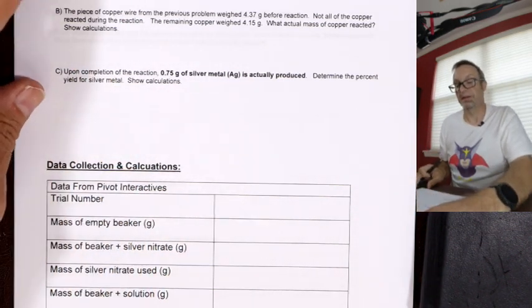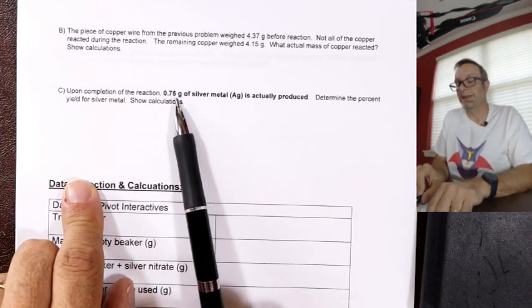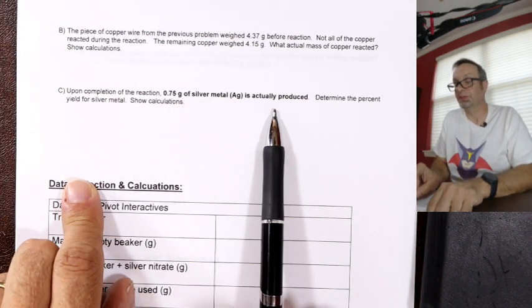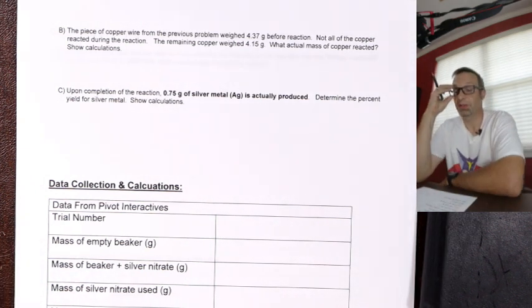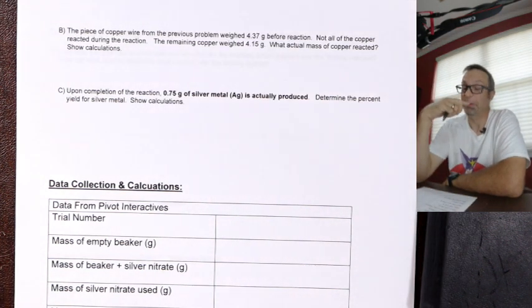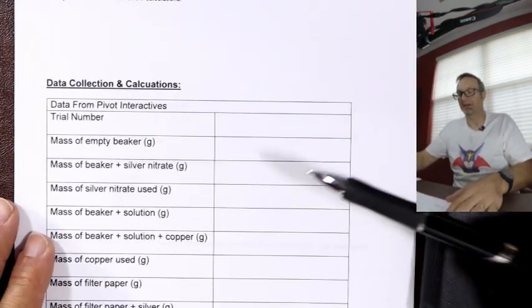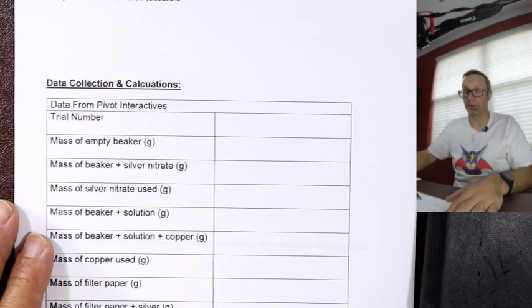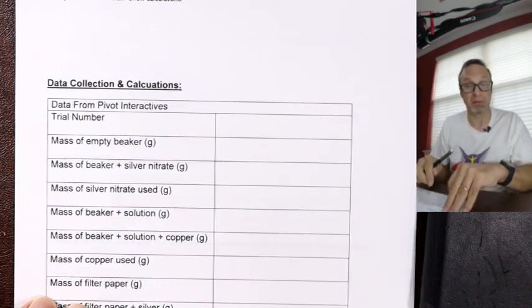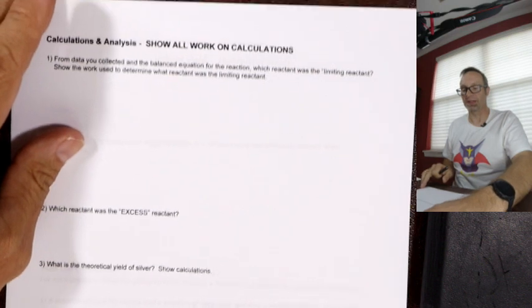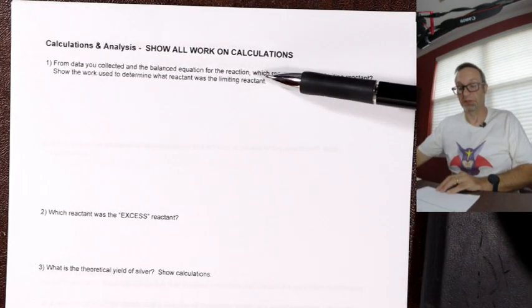Now, hopefully you can do this one. The piece of copper from the wire weighed this. The remaining copper weighed this. So you know how much was actually reacted. Show calculations. That many grams of metal was produced, determine percent yield. So those are questions. Hopefully warm you up. It's a pre-lab. This information here you get from your assigned birthday data set from Pivot. And then once you've got that data, you can just work it through. So very similar to the pre-lab.